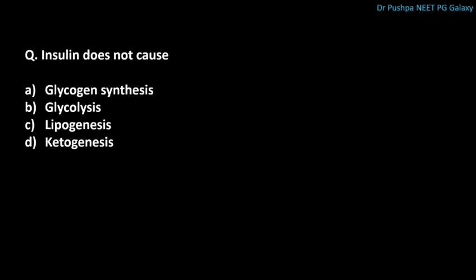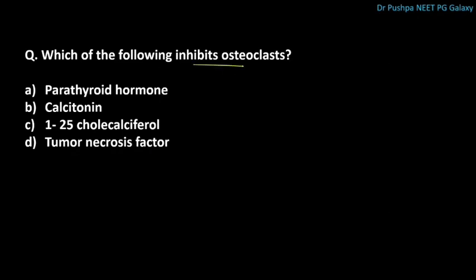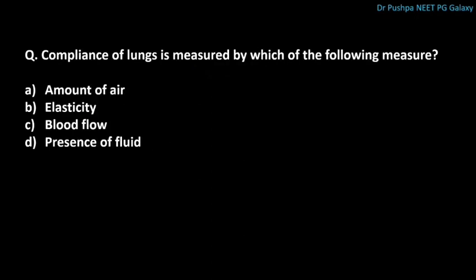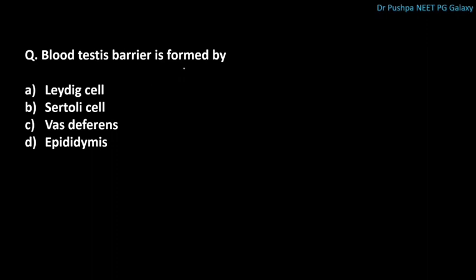Insulin does not cause ketogenesis. Which of the following inhibits osteoclasts? The correct answer is calcitonin. Compliance of the lungs is measured by the amount of air. The blood-testis barrier is formed by Sertoli cells.